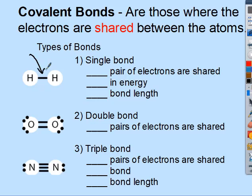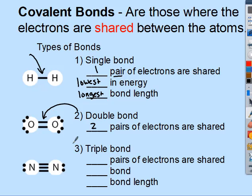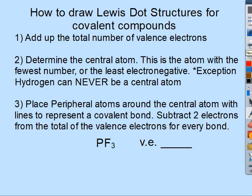In a single bond, each line represents one pair of electrons being shared. Single bonds are the lowest in energy and the longest in bond length. A double bond is represented with two lines — two pairs of electrons being shared. A triple bond is three pairs of electrons being shared, or six electrons altogether. Triple bonds are the strongest and the shortest in bond length.